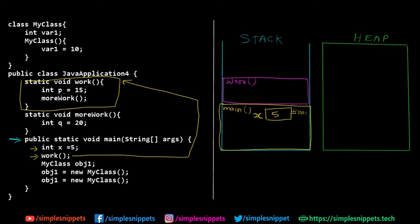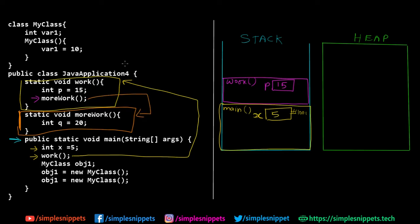Inside work we have a local variable: int p equals 15. Local variable means the scope of this variable is just inside this work method. Inside this frame, new memory is allocated with value 15 and named p. The second line of work is another method call — more work. Control is transferred from the work method to more work, and again more work is added on top of the stack. Another frame is created for more work.